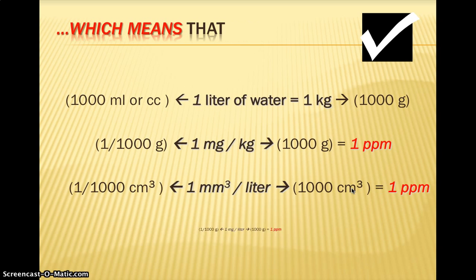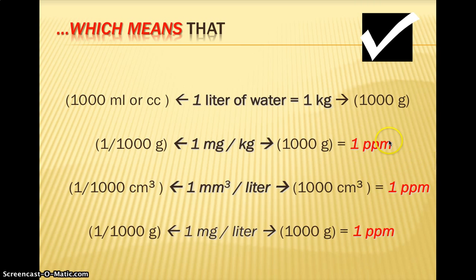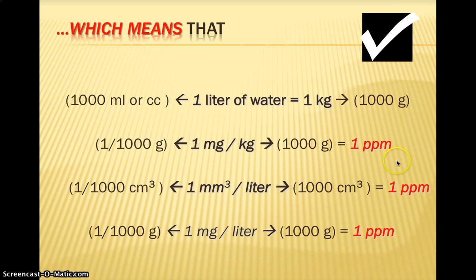There are many equivalent ways to think about parts per million. A thousand milliliters is the same as a thousand cubic centimeters, the same as a liter of water, the same as one kilogram, the same as a thousand grams. So when we talk about one thousandth of a gram, we're talking about one part per million, or we could say one milligram per kilogram. You can also replace those units with cubic centimeters — millimeters cubed per one liter — or milligrams per liter. All of these are equivalent ways of writing one part per million of water.